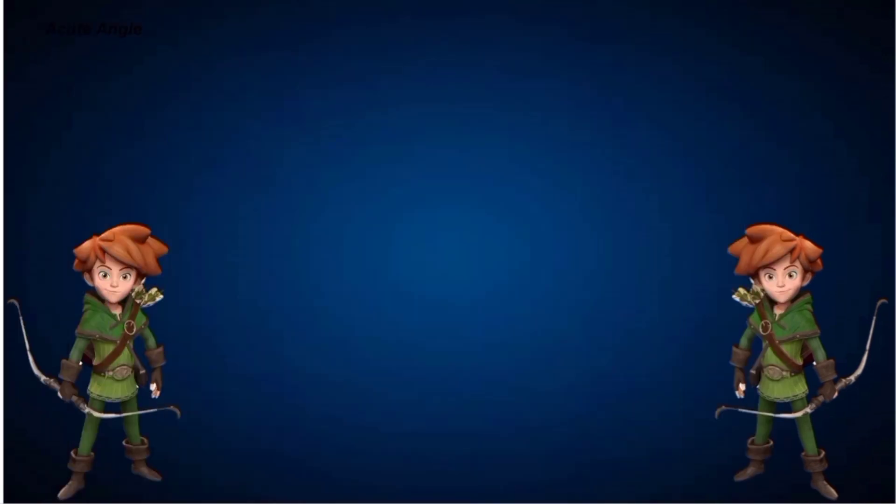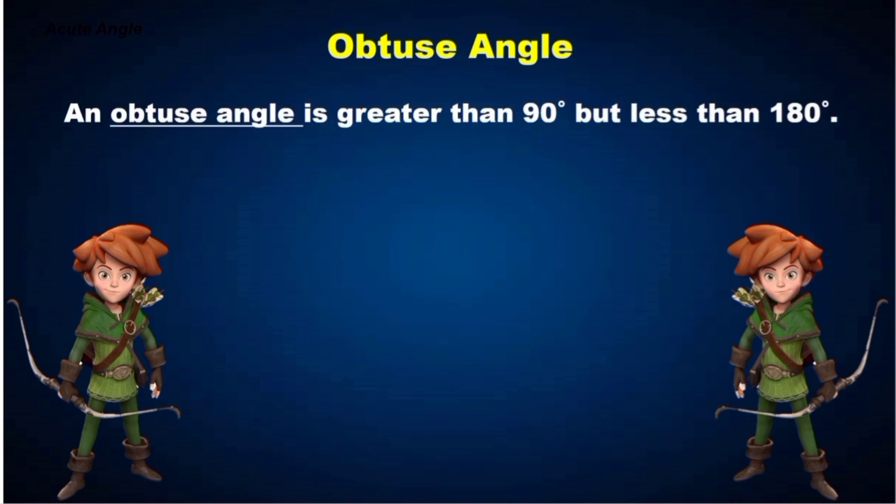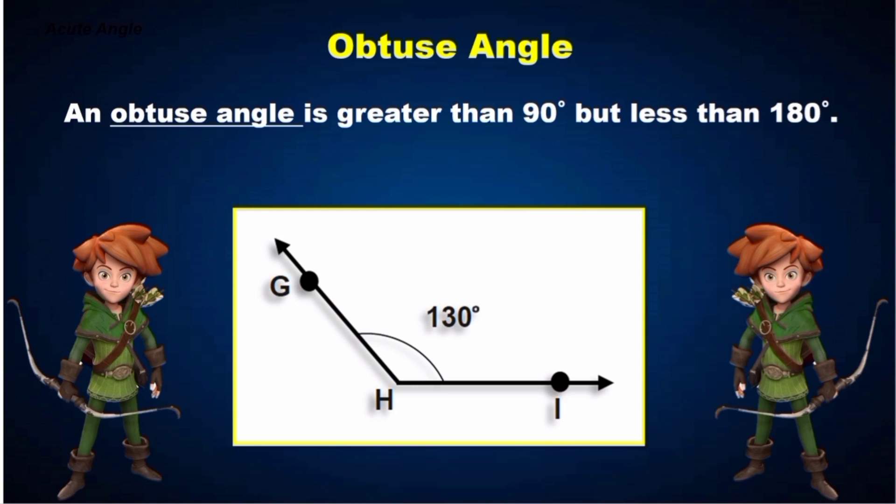Now let's identify obtuse angle. An obtuse angle is greater than 90 degrees, but less than 180 degrees. Now look at our example. Angle GHI is 130 degrees. Therefore, angle GHI is an obtuse angle.